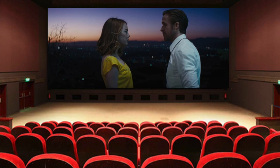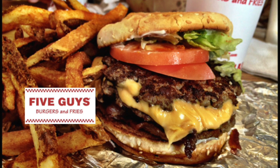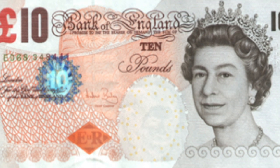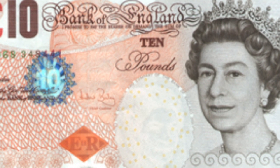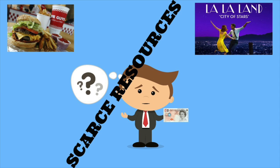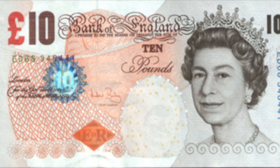Now, let's say you wanted to go to the cinema to watch the new La La Land film, which I highly recommend by the way. However, you're also craving a burger from Five Guys, but all you have is £10. You're going to have to choose between watching La La Land or going to Five Guys. This is an example of a decision you are forced to make due to scarce resources, which in this case is money — your £10 note.